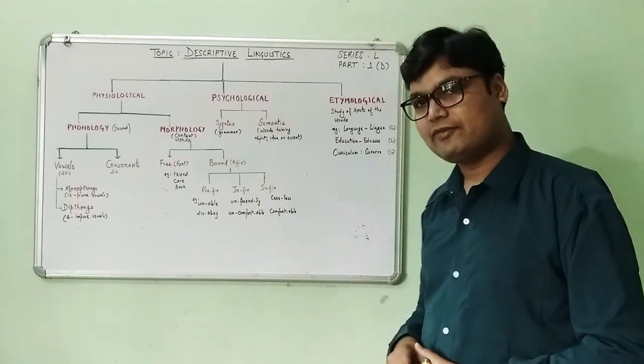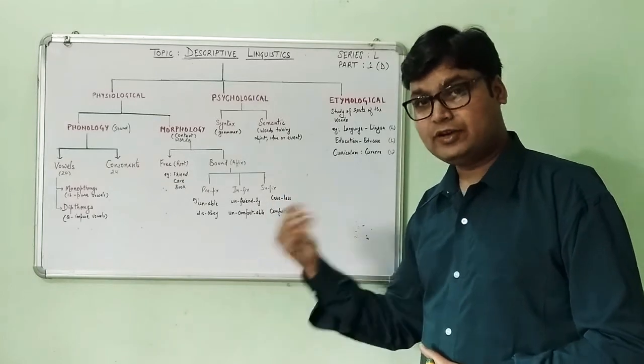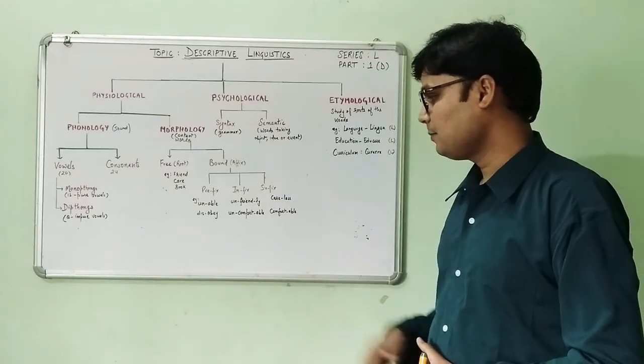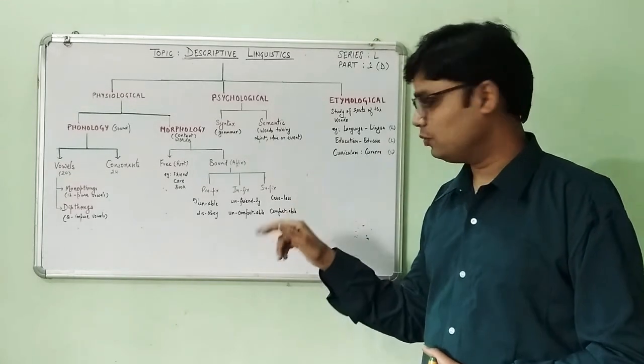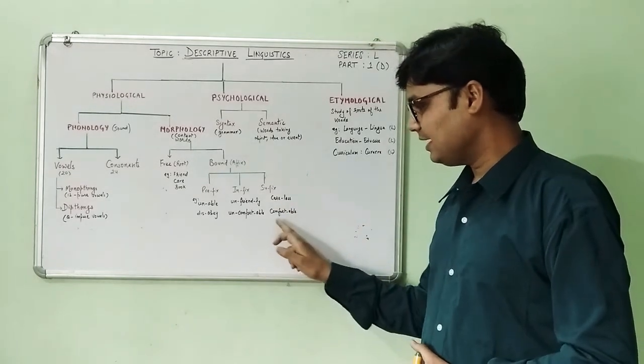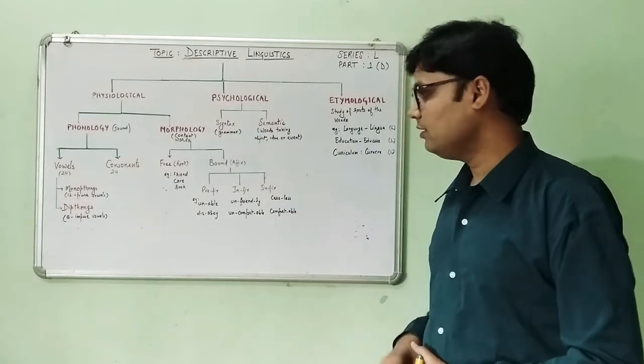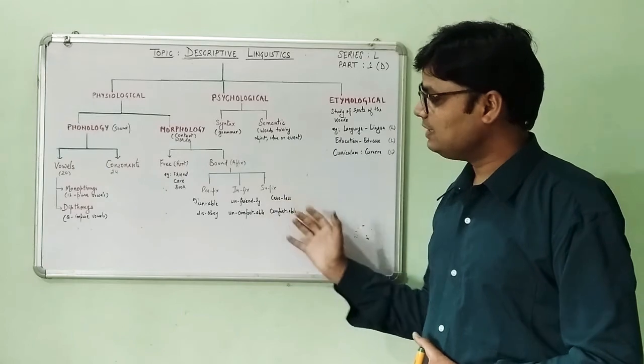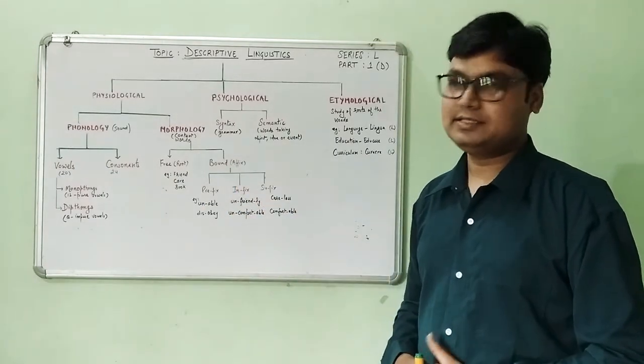The third and last one is suffix, when a word is added after the root word. In this case, 'careless', the word 'less' is added to the root word 'care'. In 'comfortable', the word 'able' is added to the root word 'comfort'. So these are the three heads under which bound words can be studied.